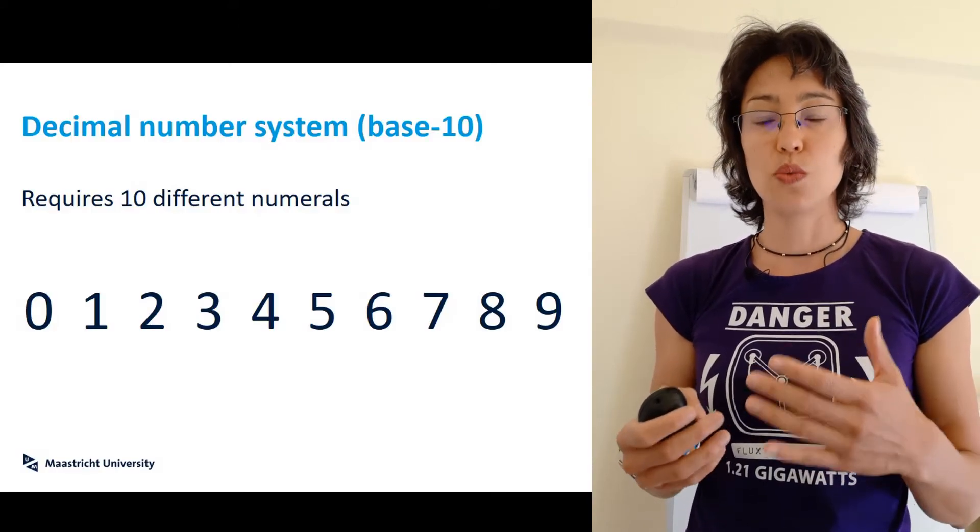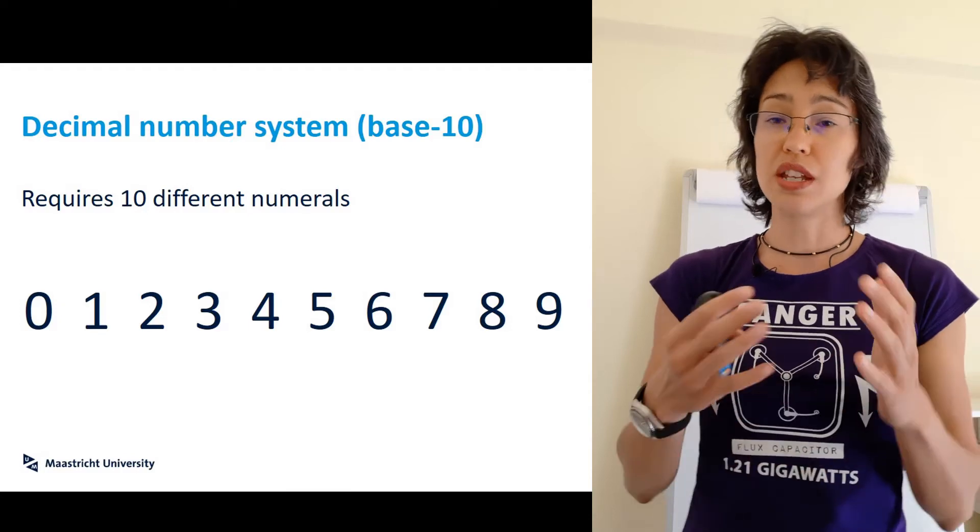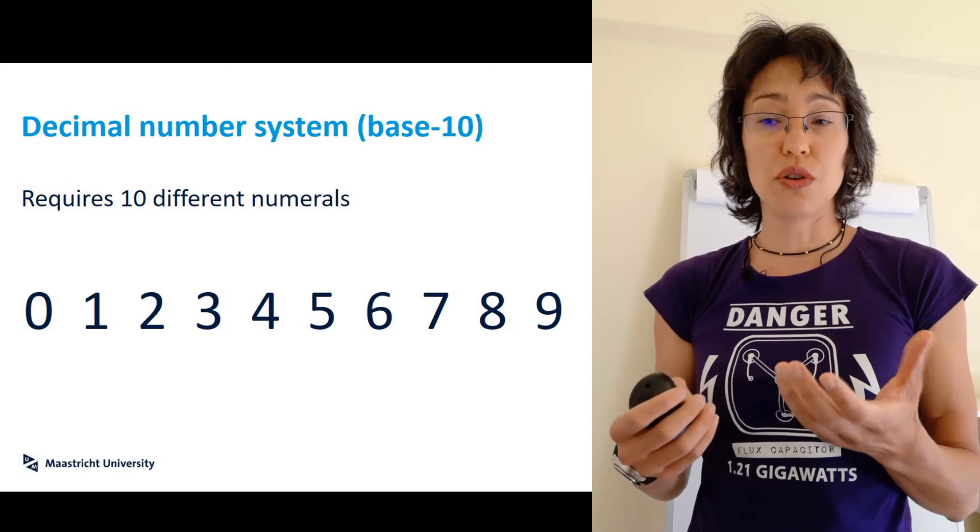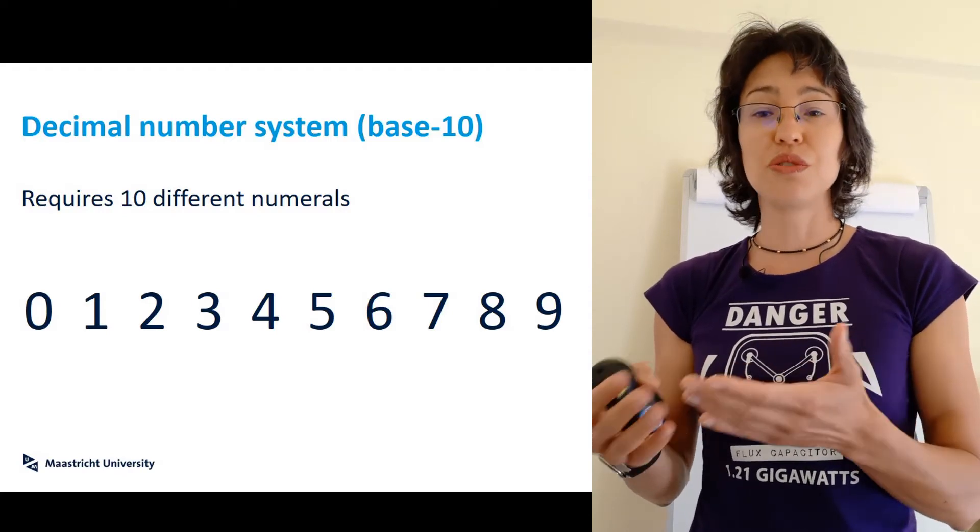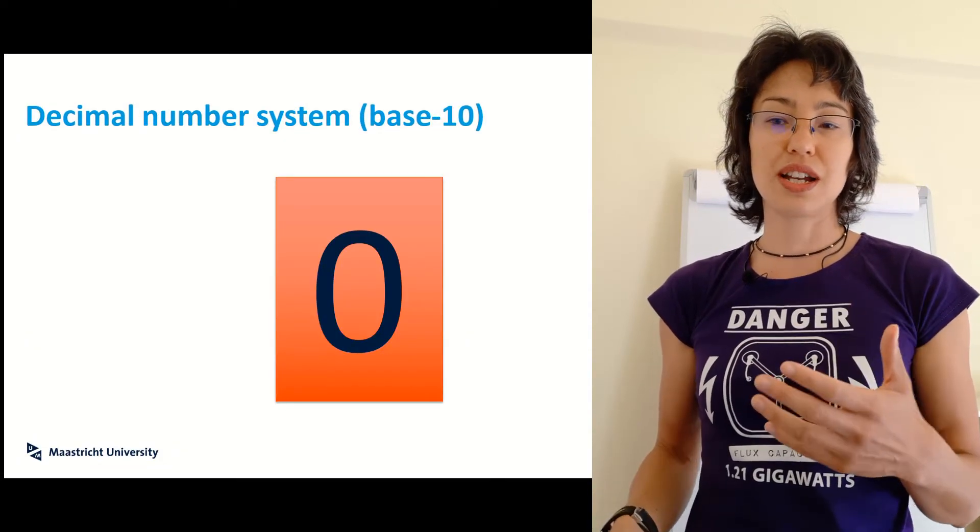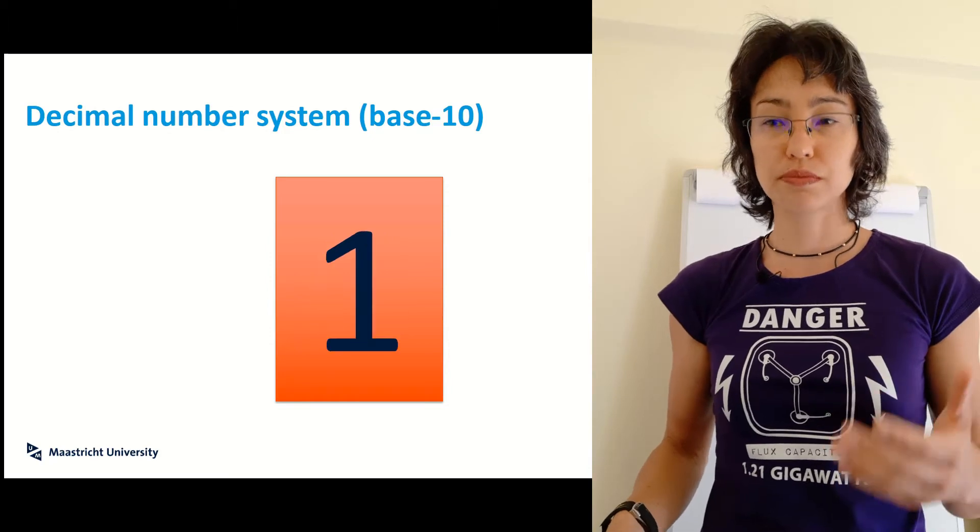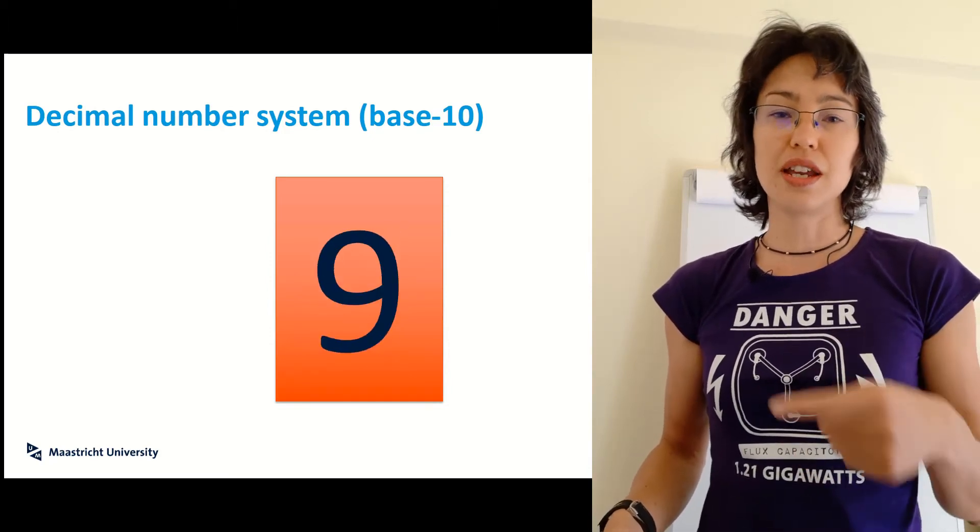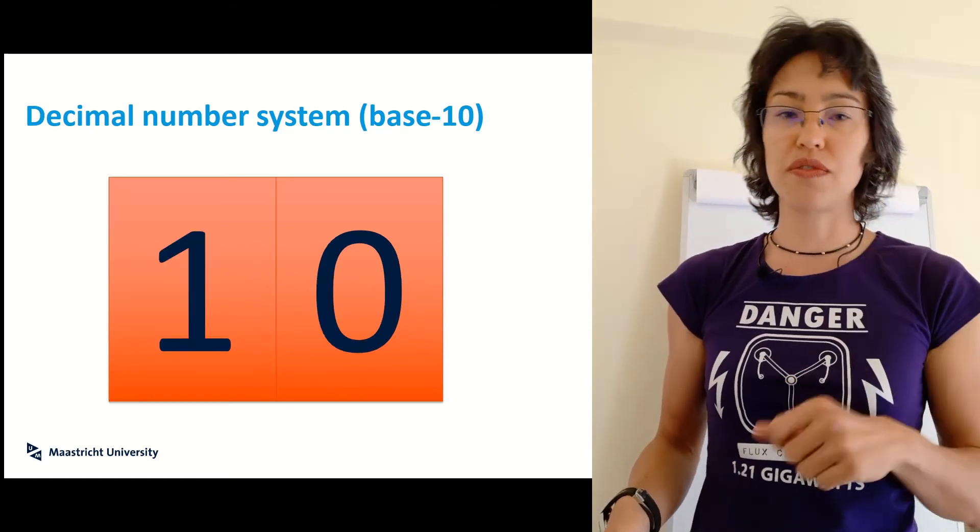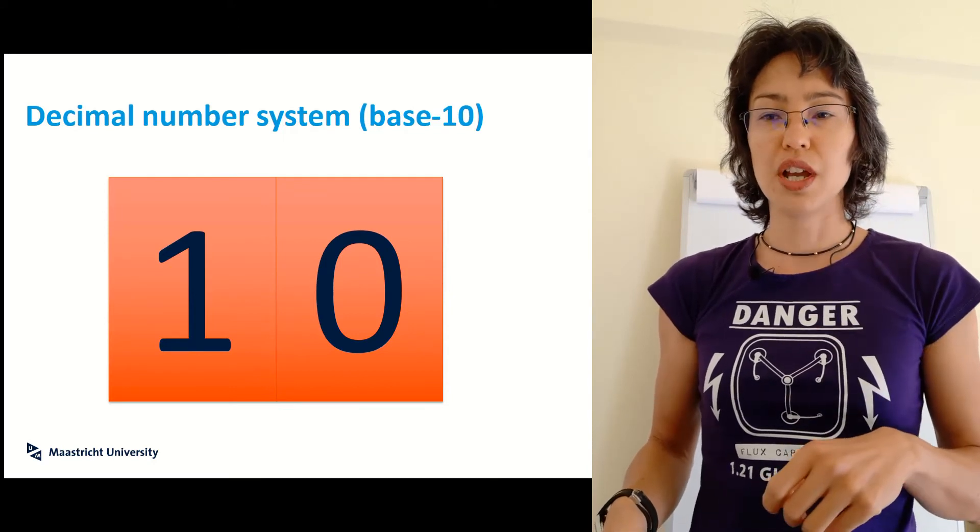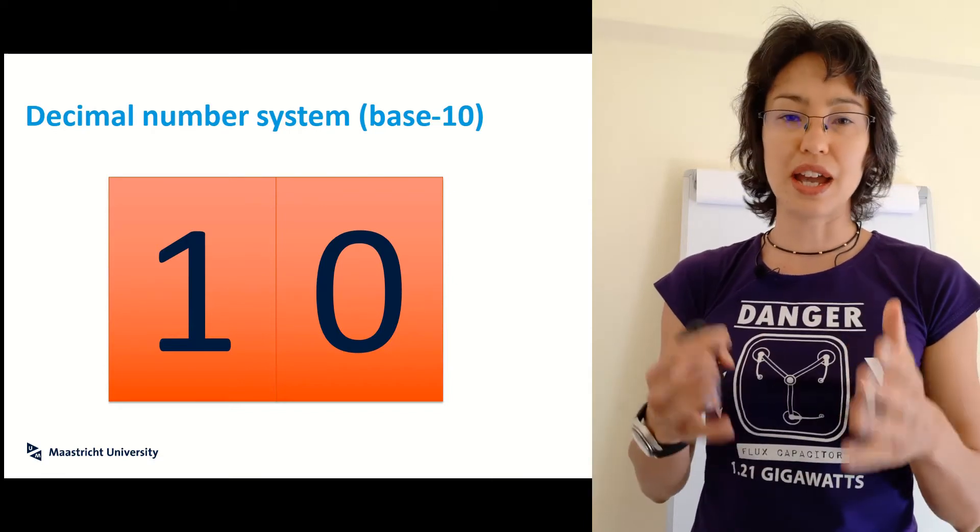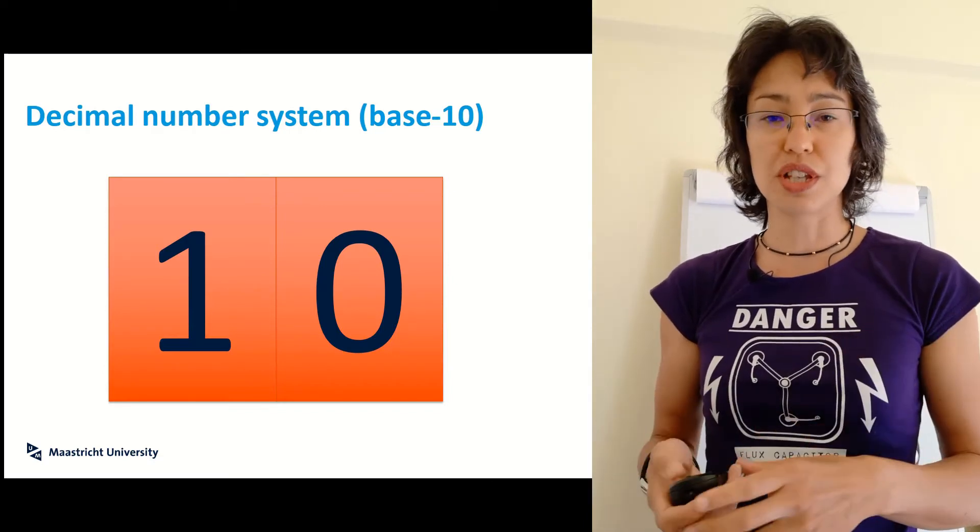In our decimal system, we require 10 different numerals, zero through to nine. Of course, it's possible to count higher than nine, and to do so we have to use what we call a positional notation. So once I get to nine, if I want to count higher, I have to reset my ones to a zero and I move off to another column where I denote a one. So now my zero is representing that I have nothing in the ones column and I have one in my tens column.